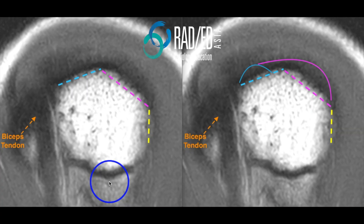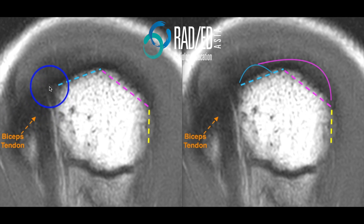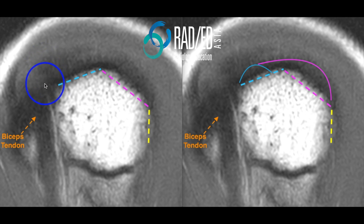Let's begin with a bit of anatomy of the greater tuberosity. It doesn't sound terribly interesting, but it's important in understanding the insertion sites. This is a sagittal image showing the biceps tendon and the posterior margin of the bicipital groove, which we've spoken about before in terms of its importance in marking the anterior margin of supraspinatus.